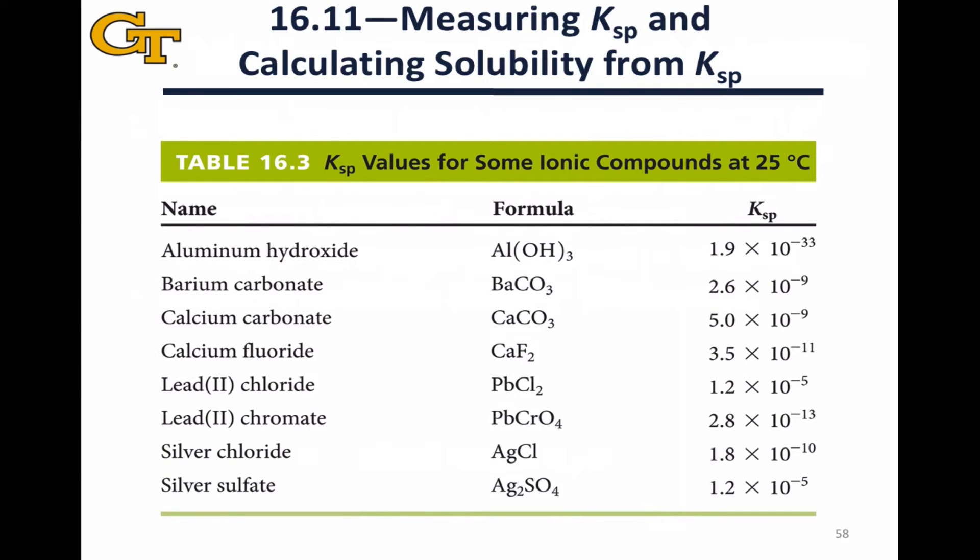Here are some examples of Ksp values that give you a sense of what we call soluble and insoluble salts. Aluminum hydroxide, for example, has an extremely tiny Ksp at 1.9 times 10 to the negative 33. This is a textbook definition of an insoluble salt, but it drives home the point that an extremely tiny amount of aluminum hydroxide does dissolve even though it's what we call insoluble. Solubility is a continuum. It's governed by equilibrium in the same way all chemical reactions are, and that's worth keeping in mind as you go on to more advanced studies.